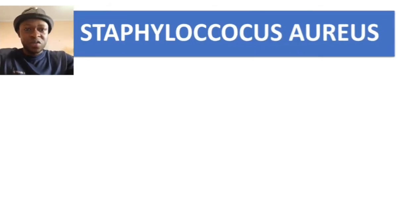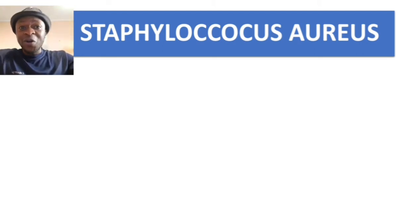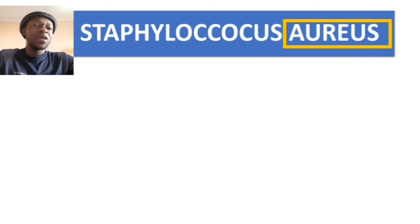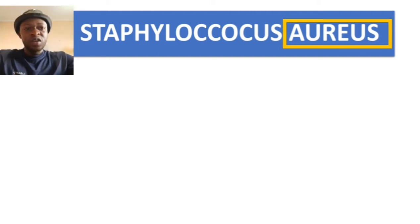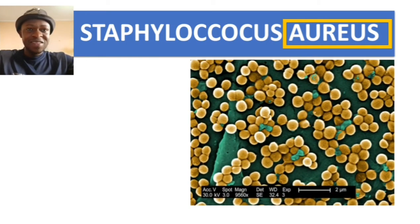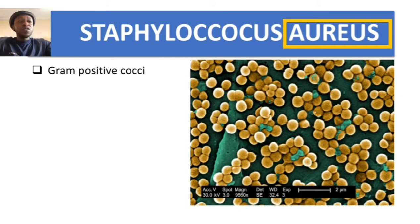We are talking about Staphylococcus aureus, or simply Staph aureus. 'Aureus' means gold. This bacteria produces colonies which are yellowish-gold in color — they look like golden grapes. Staph aureus is a gram-positive cocci and is catalase positive.